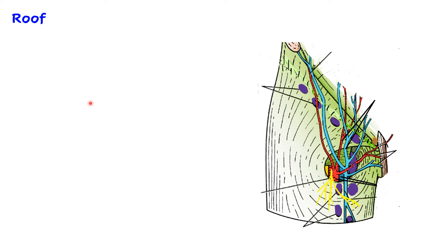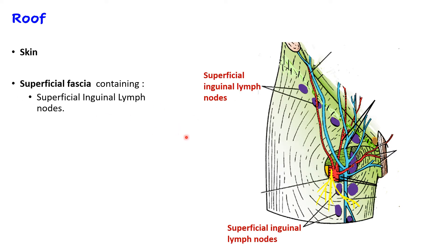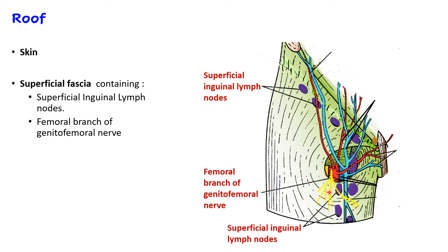Now let us see how the roof is formed. The most superficial structure is skin. After skin comes superficial fascia. In the superficial fascia within the femoral triangle, we will have the superficial inguinal lymph nodes - a horizontal group and a vertical group. We will also have a nerve, the femoral branch of the genitofemoral nerve, running in front of the femoral artery, which supplies the skin over the femoral triangle.